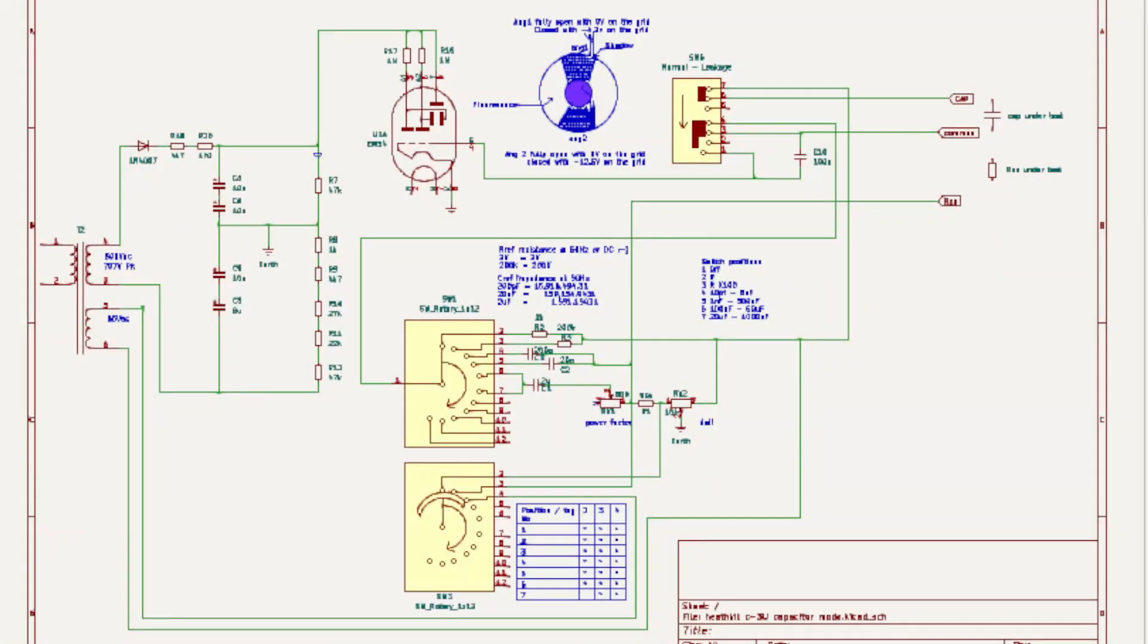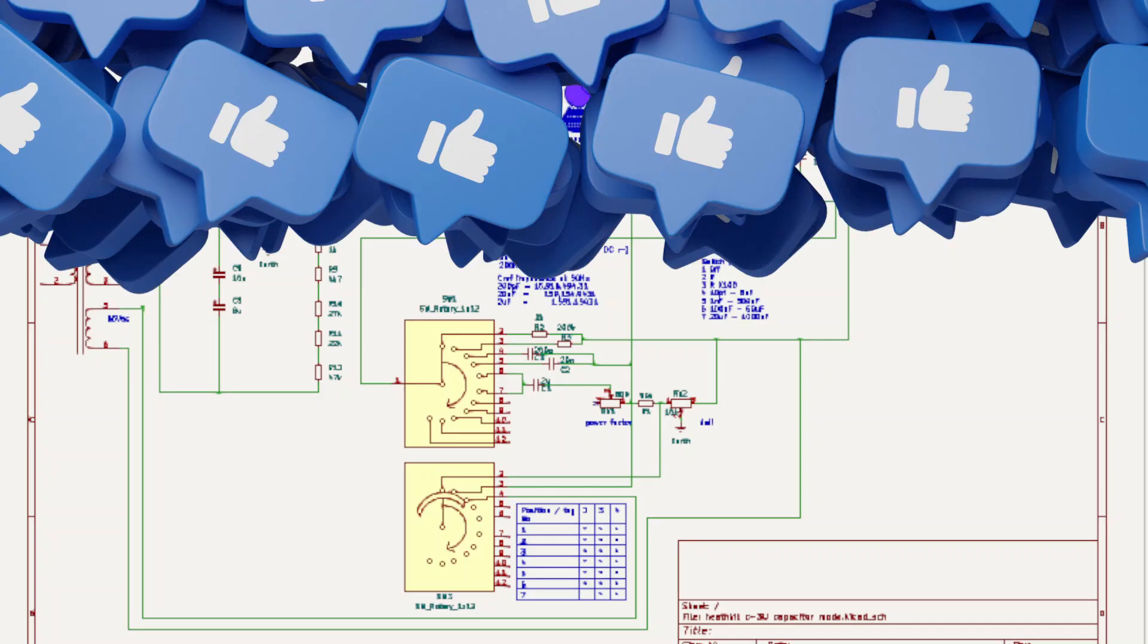Right, here we are looking at my version of the circuit. The Heathkit C-3 measurement is based on the Wheatstone bridge. The EM-35 magic eye performs the balance bridge indication. When the bridge is balanced there is no voltage potential between the earth and the grid of the EM-34, so the eye will be fully open. That eye will close as the bridge moves away in either direction from the null point.